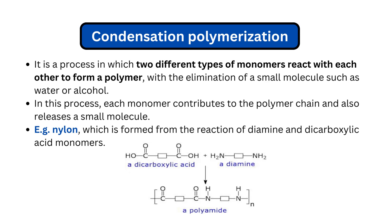In condensation polymerization, two different types of monomers react with each other to form the polymer. Unlike addition polymerization where the same monomer — such as ethylene with ethylene — reacts, here two different monomers react together. This process also produces byproducts of small molecules such as water and alcohol.